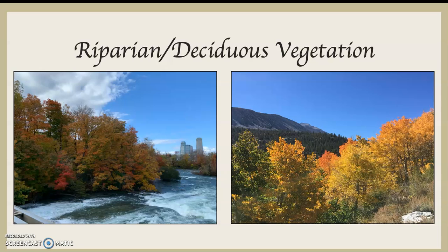You can see in both of these pictures, the one on the right and the left, that these deciduous trees are changing colors. Those are the types of plants that do that. On the right-hand side, if you look in the background, you can see the evergreen forest, while the forest in the foreground is closer to the river banks. Then you can see obviously this is the Niagara River on the left-hand side — you can see that vegetation is right next to the river.